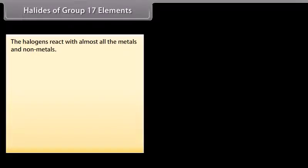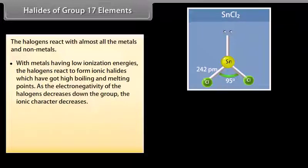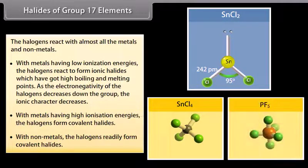Halides of group 17 elements: Halogens react with almost all metals and non-metals. With metals having low ionization energies, halogens form ionic halides with high boiling and melting points. As the electronegativity of halogens decreases down the group, the ionic character decreases — for example, SnCl2 and PbCl2. With metals having high ionization energies, halogens form covalent halides — for example, SnCl4 and PbCl4. With non-metals, halogens readily form covalent halides — for example, PF5 and PCl3.